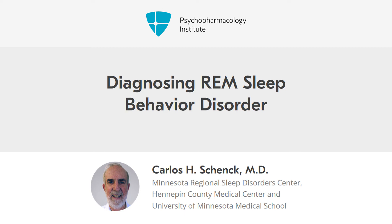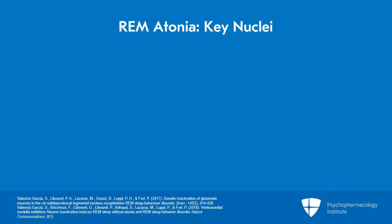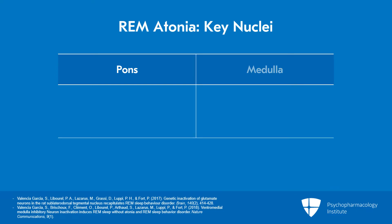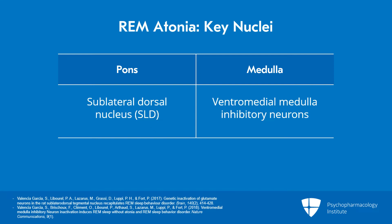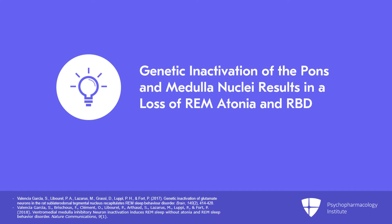I will now talk about diagnosing REM sleep behavior disorder. We know through elegant basic science studies that there are two key linked brainstem nuclei that generate REM atonia. One is in the pons and the other is in the medulla. The pontine tegmentum has the sublateral dorsal nucleus, known as the SLD, that is linked with the ventral medial medulla inhibitory neurons. Genetic inactivation of these two nuclei resulted in loss of REM atonia and REM sleep behavior disorder in rats.